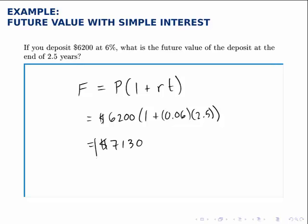So that does the two steps in one, calculating the amount of interest that accrues over the two and a half years, and then adding that on to the principal. So basically, at the end of two and a half years, this account will hold $7,130.